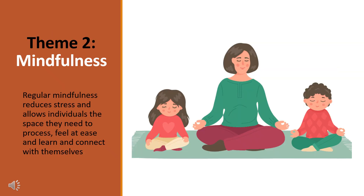The second theme focuses on mindfulness. Mindfulness activities help us to connect with ourselves so that we can connect with others, build relationships and develop good social skills. Children with a visual impairment can experience stress in relation to communication as they may find it more complex. Regular mindfulness reduces stress and allows individuals the space they need to process, feel at ease and learn. You can try a mindfulness exercise that is being included in the parent handbook.